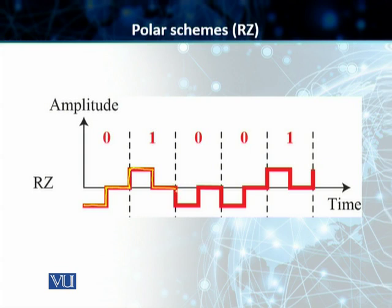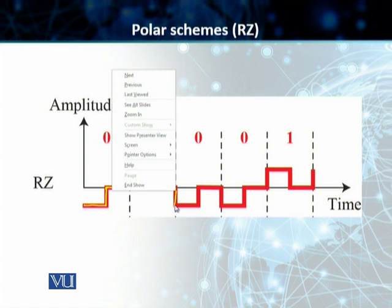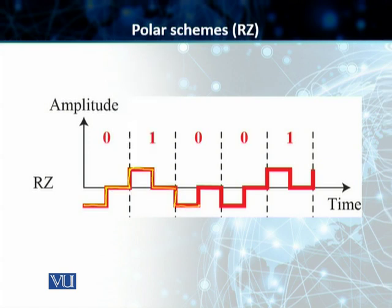We are going to start at the negative voltage level, come down, and change states in the middle. We finish here. The next bit is again zero, so we come down to the negative voltage level, start from here, make a transition, and finish here. The next bit is one — we go up, start from the positive level, make a transition in the middle, and we finish here.